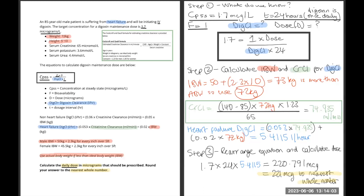So ideal body weight for males: 50 kilograms plus 2.3 times 10. 10 because it's 10 inches over 5 foot, as the patient's height is 5 foot 10. That'll give us 73 kilograms.